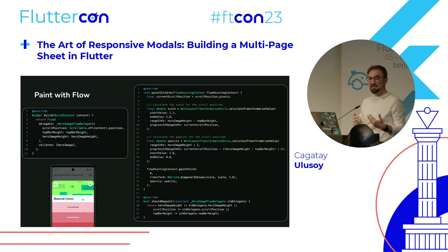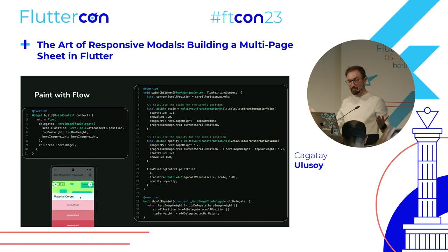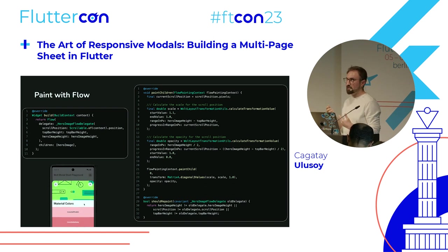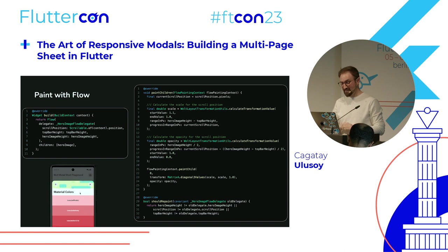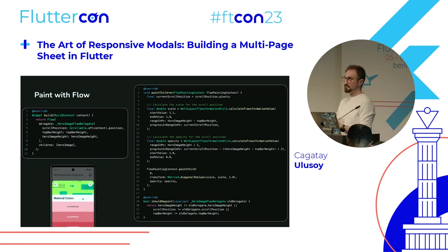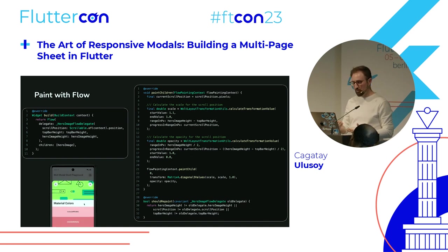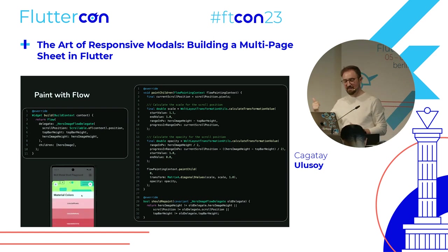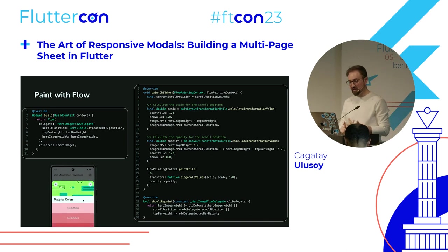Motion design is about changing translation values, scale, opacity, and rotation of components. These are all handled in the paint phase of the rendering pipeline. We want to stay in the widgets layer, so Flutter provides a Flow widget which delegates the paint phase to its delegate — similar to how CustomMultiChildLayout works. Inside this method we calculate scale and opacity values according to the scroll position. There is also a shouldRepaint method — we repaint only when delegate parameters differ from the previous one, such as when scroll position, hero image height, or top bar height changes.